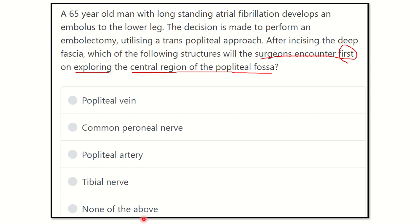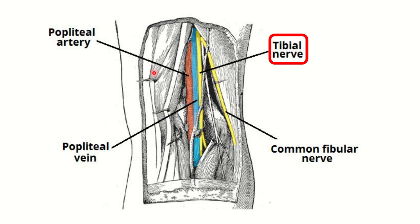Now let's see the figure. Here we can see the popliteal fossa. It is a diamond-shaped space, bounded by different muscles. Here we can see the contents of the popliteal fossa, and we can see that the most superficial structure in the central region is the tibial nerve. This is the central region of the popliteal fossa.